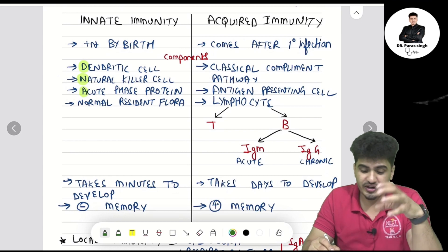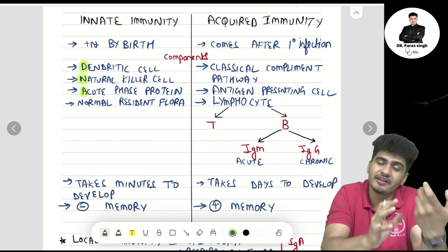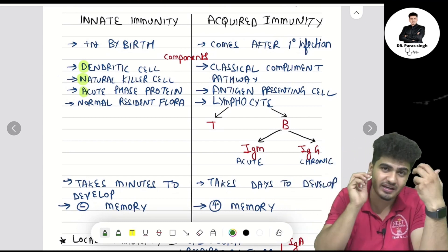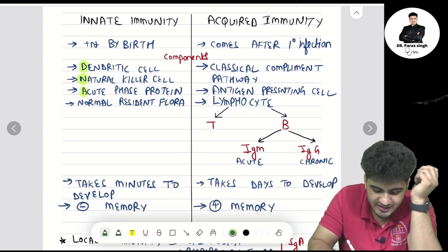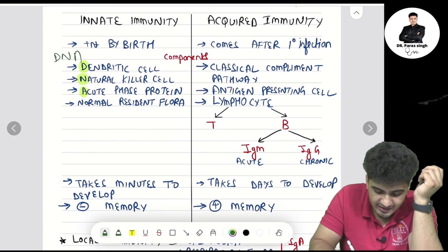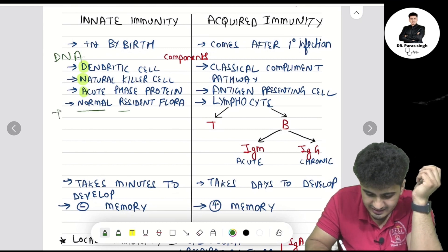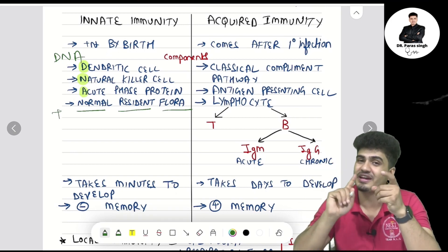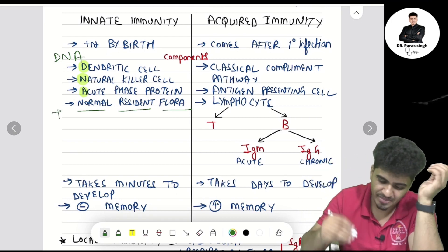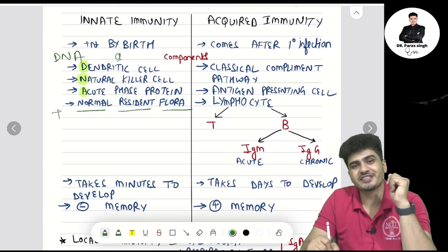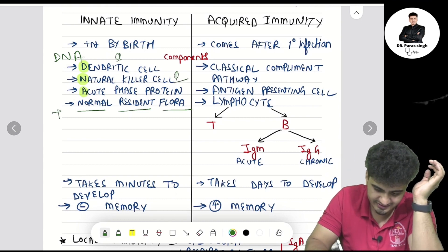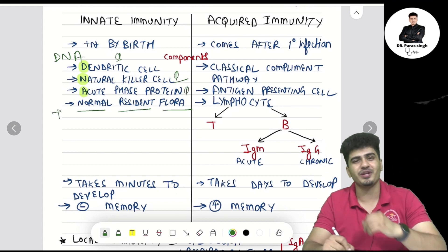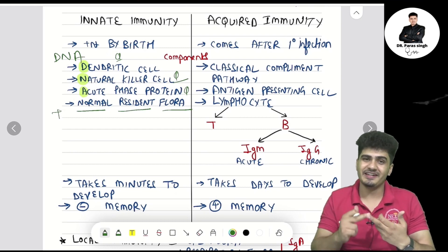Now, a mnemonic for the components of innate immunity: DNA plus Normal Resident Flora. D is for dendritic cell, N is for natural killer cells, A is for acute phase proteins, and the fourth component is normal resident flora.